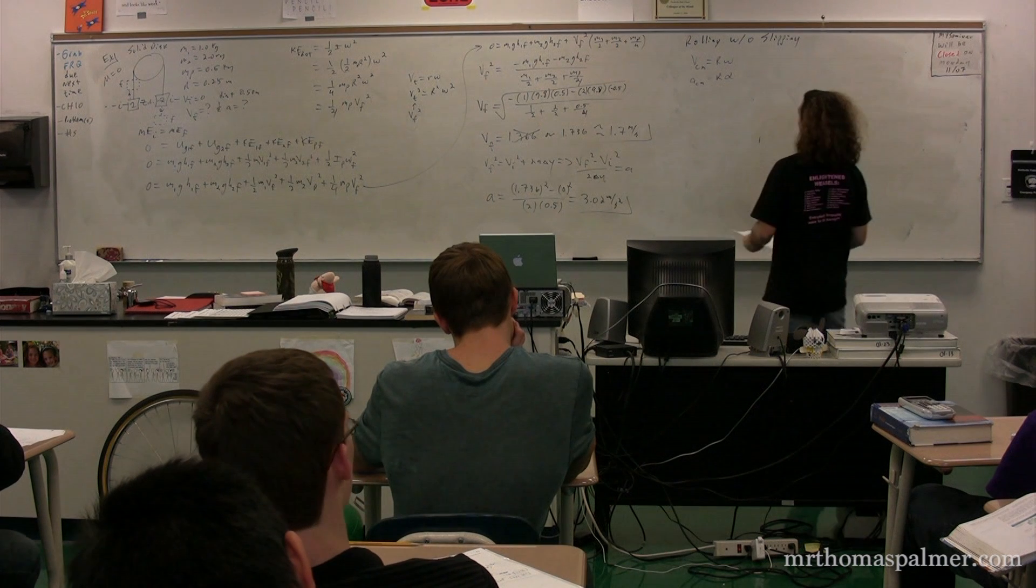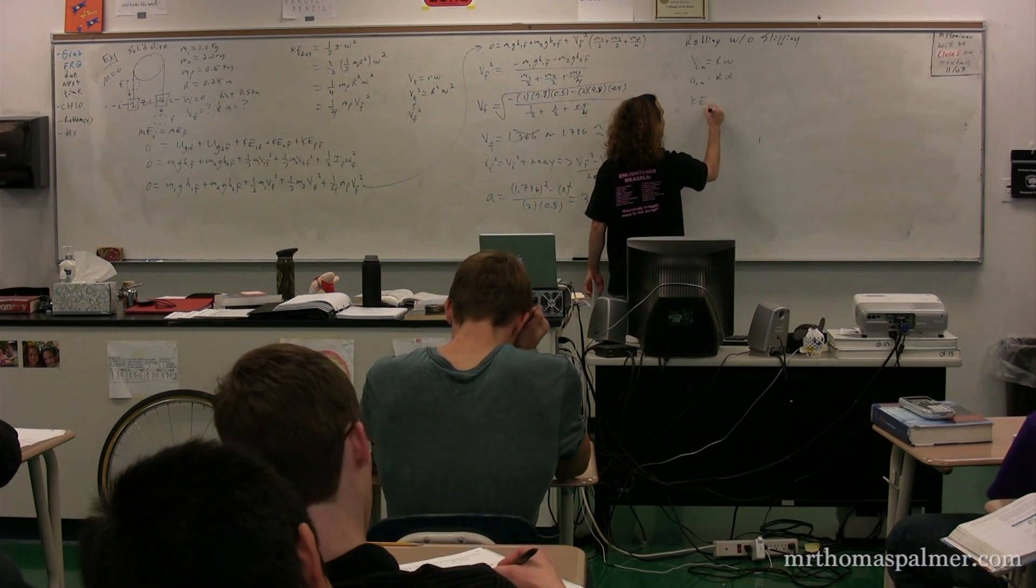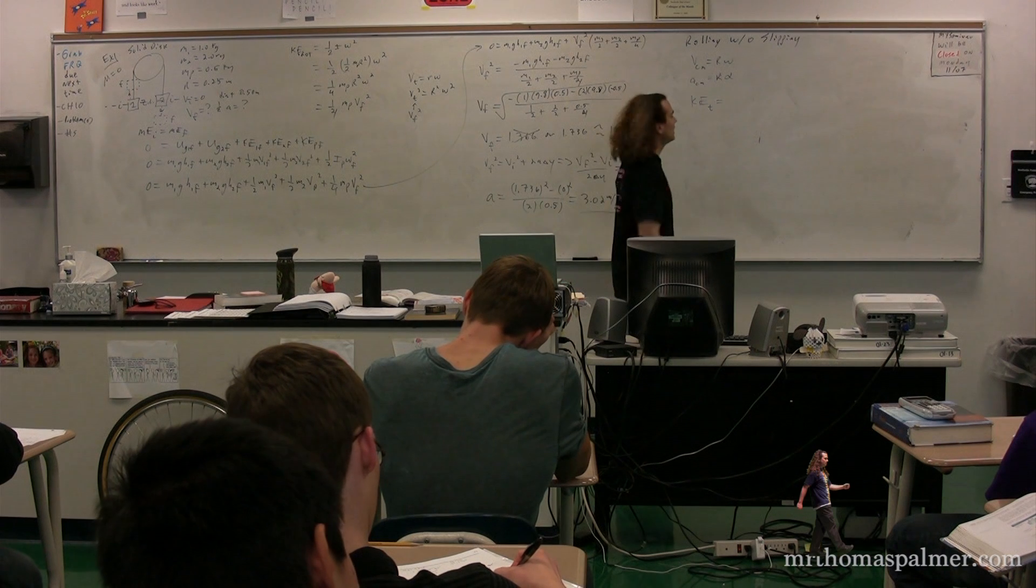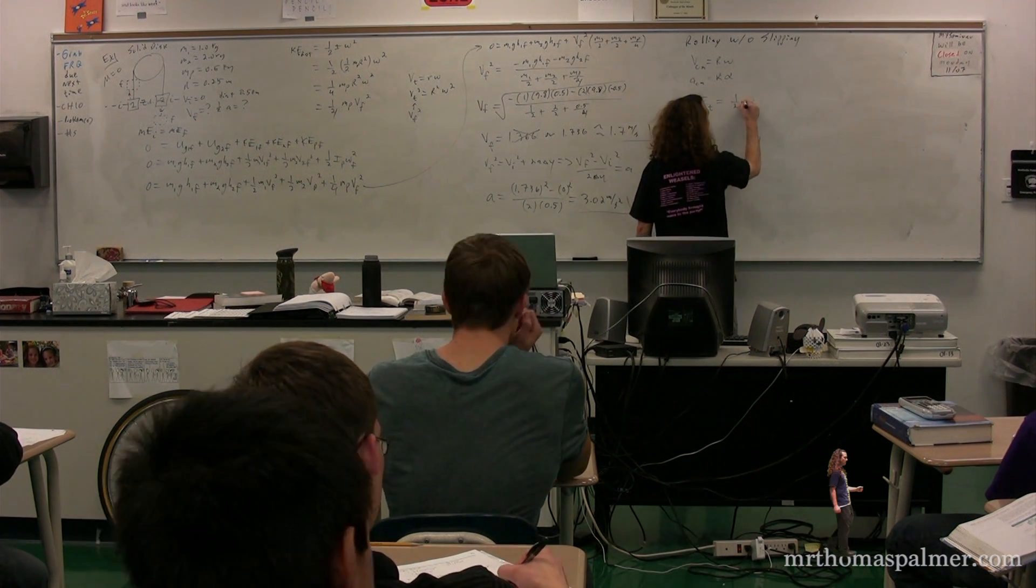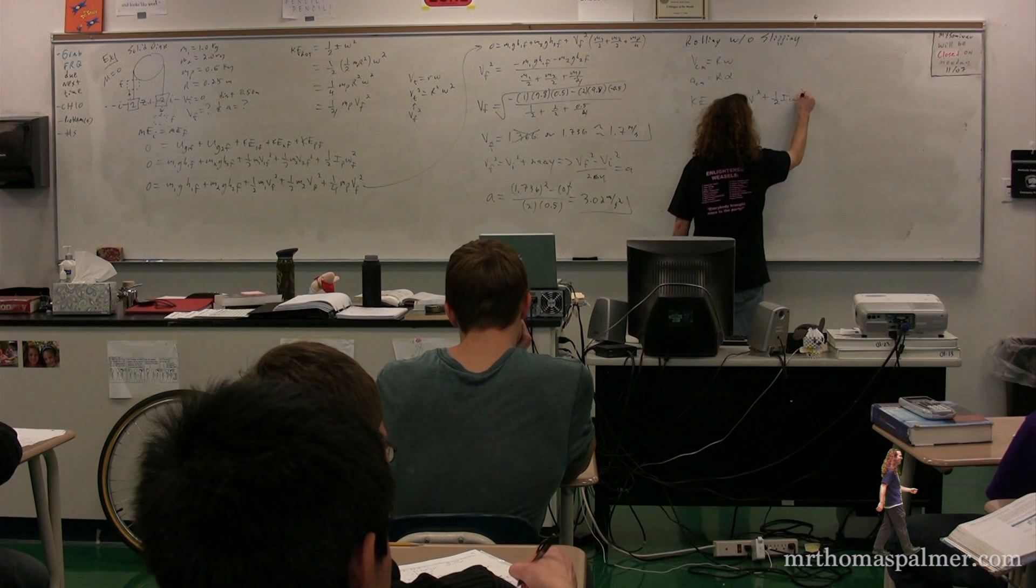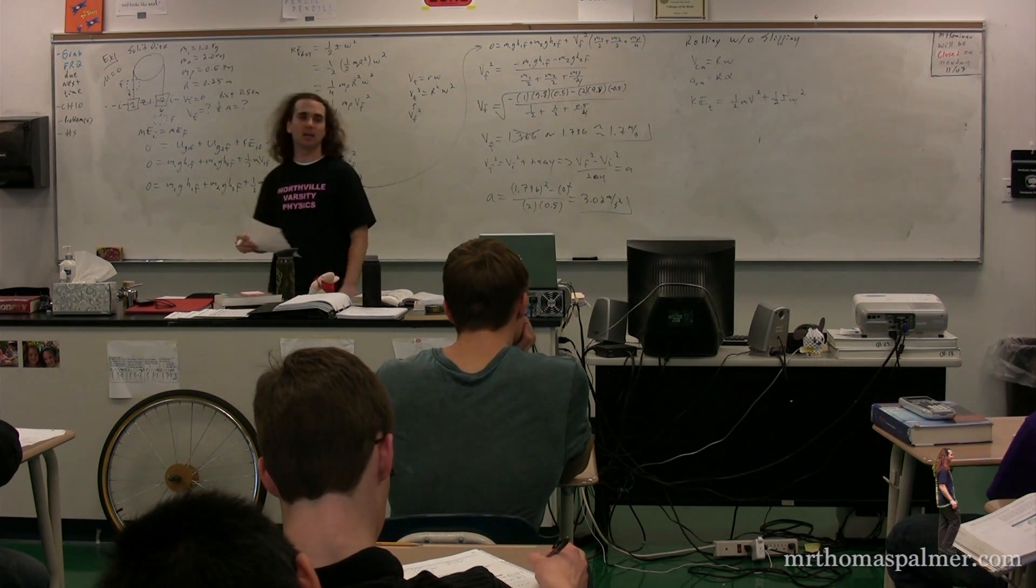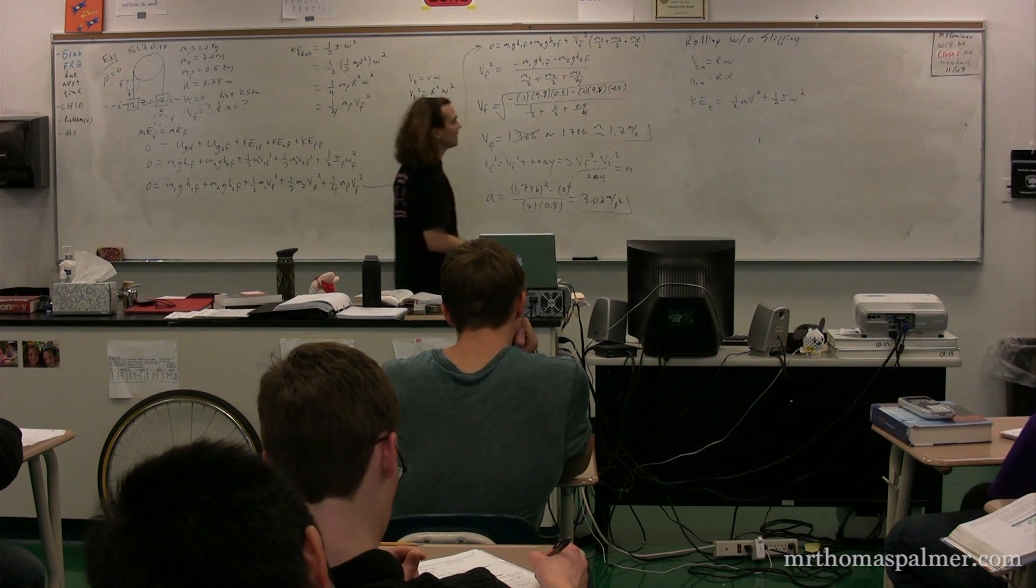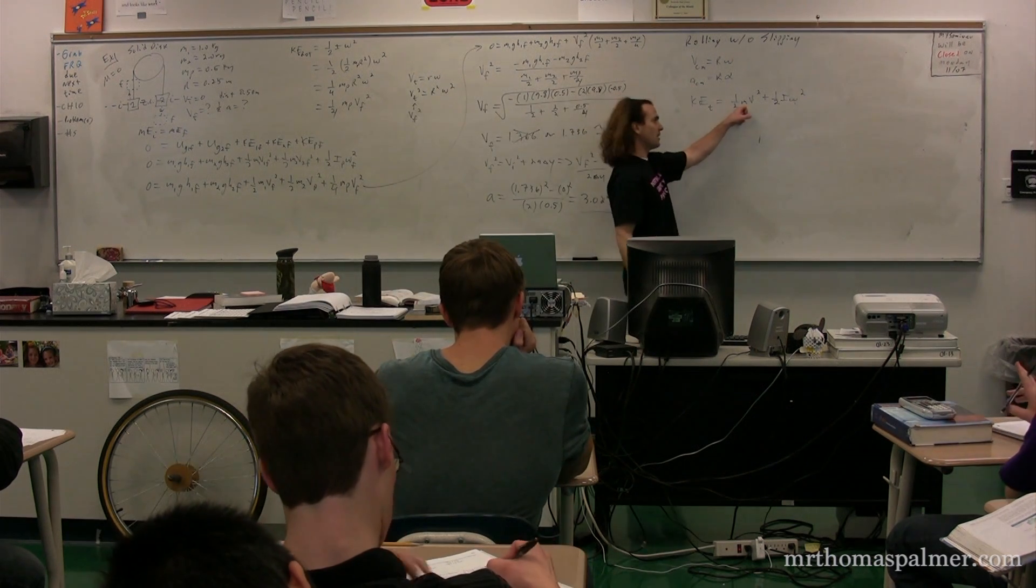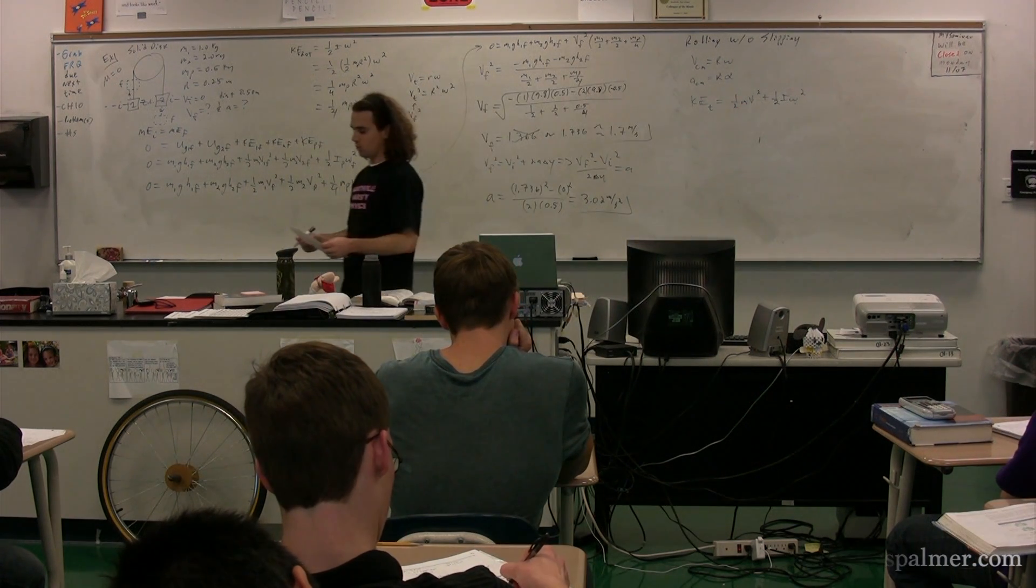This means when an object is rolling without slipping, the total kinetic energy is equal to one-half mv squared plus one-half I omega squared. Because the object is not just rotating, but it's also translating. It has both linear kinetic energy and rotational kinetic energy.